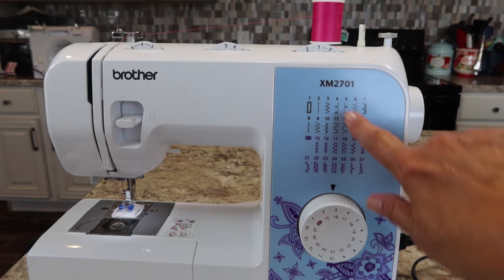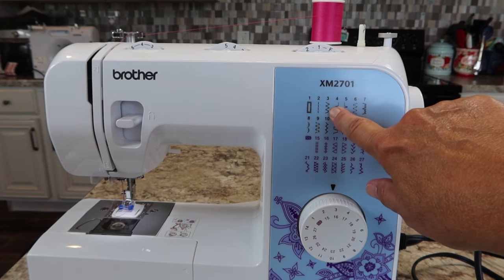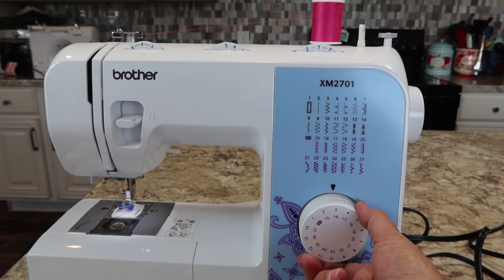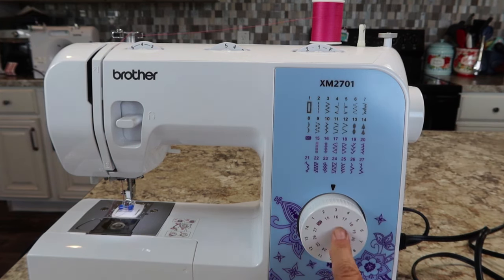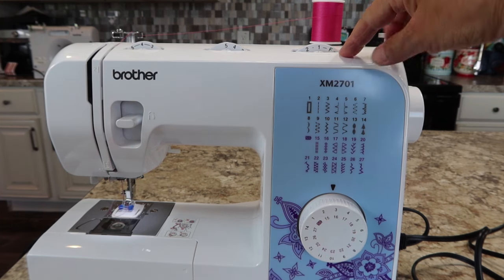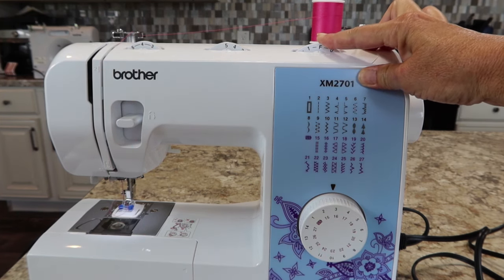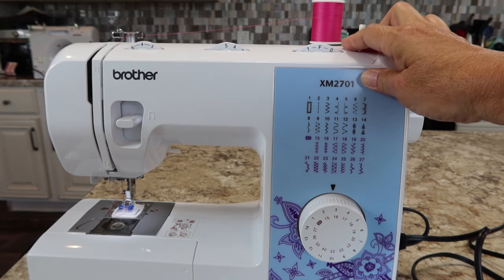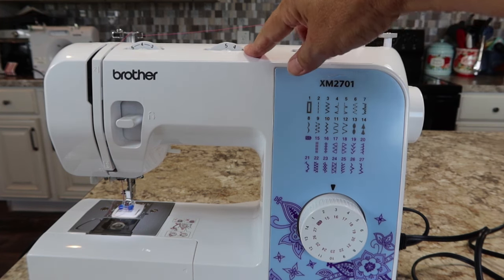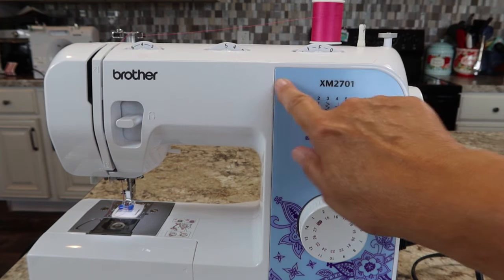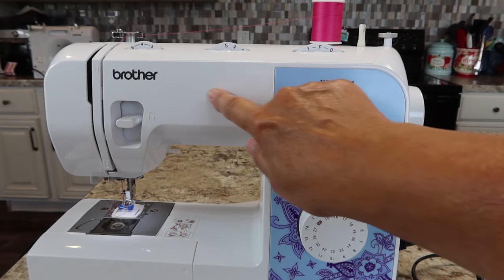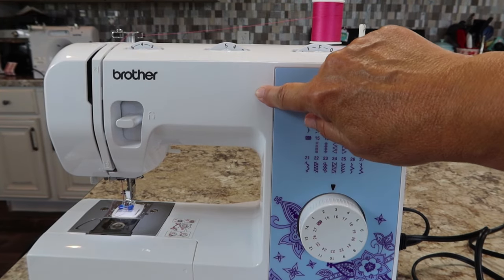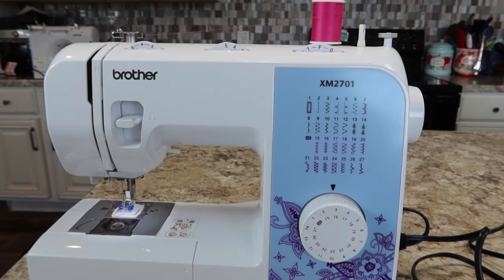Now for the settings. We're going to use stitch number three, which is a zigzag that goes side to side. So turn your knob here until you see the three. All right, this is your stitch length and you want it on the F for button. You don't want it moving. This is your stitch width. This determines how far it's going to go from side to side. Well, we don't know that yet. We're going to have to determine that when we get a button on.